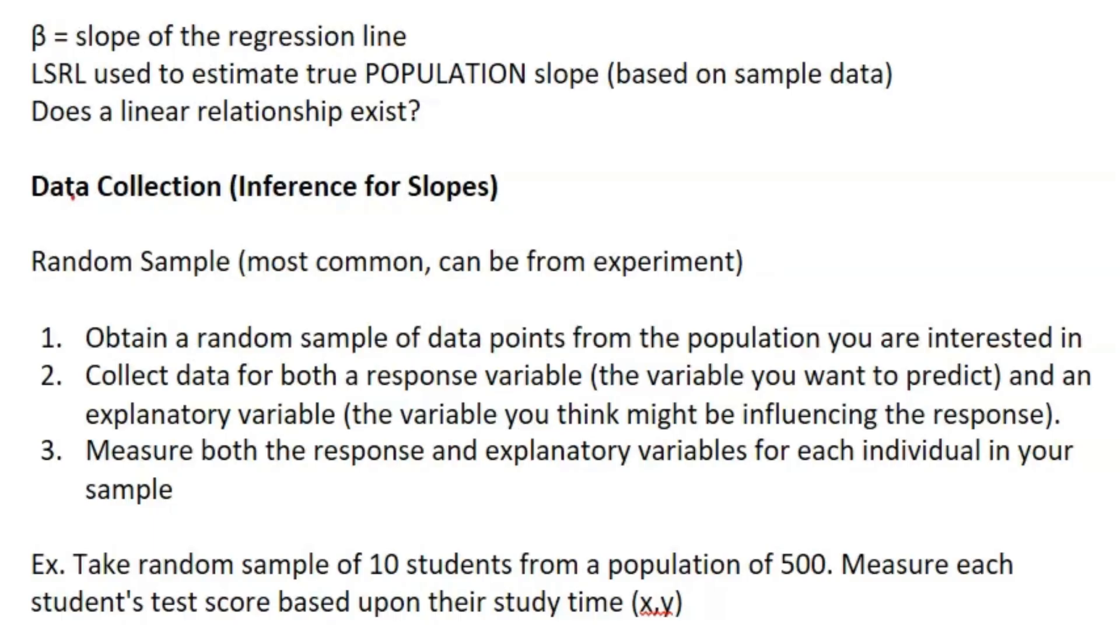You've got your confidence intervals, significance tests, and a couple more nuances in between. We have a new symbol here, this β (beta) symbol, which is the slope of the least squares regression line. Instead of trying to estimate the true population proportion or mean, now it's the true population slope, and we're doing this using sample data just like before.